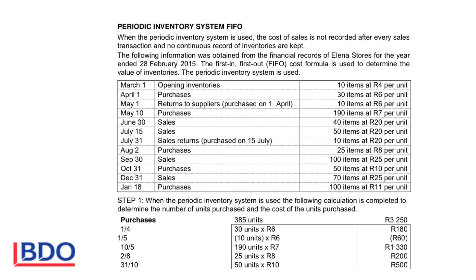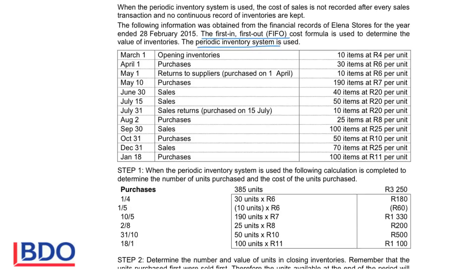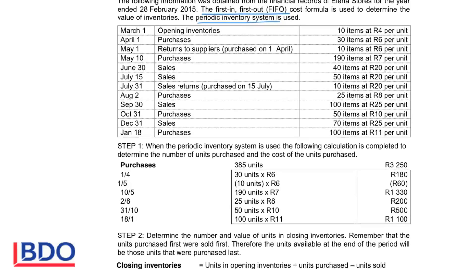The following information was obtained from the financial records. The first-in-first-out method is used and they use the periodic inventory system. Looking at the information provided, they give us opening inventory and then the purchases. I am going to record all the purchases so that we can see what our total purchases are.